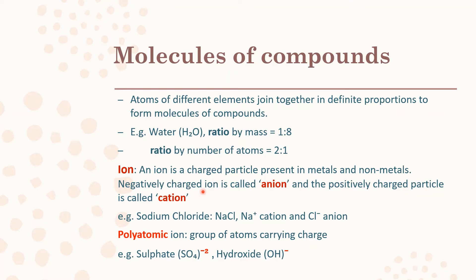An ion is a charged particle present in elements. Metals carry positively charged particles called cations, and non-metals carry negatively charged particles called anions. For example, sodium chloride has a sodium cation and a chlorine anion. We also have sulfate, hydroxide, and carbonate — these are polyatomic ions. Sulfate (SO₄) has four oxygen atoms and one sulfur atom and carries a negative charge. Hydroxide (OH) is also called the hydroxyl group and carries a negative charge.